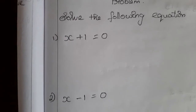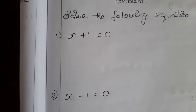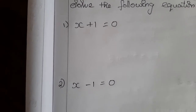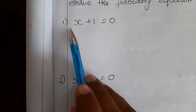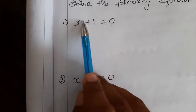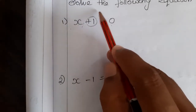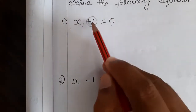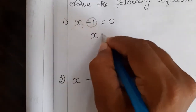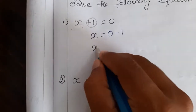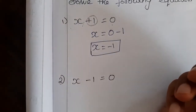Now let's go through problems using the transposition method to solve simple equations. First: x plus 1 is equal to 0. Our aim is to find the value of x. Let me transpose this plus 1 to the other side. Plus 1, if you transpose, it will become minus 1. So x is equal to 0 minus 1, which is minus 1.